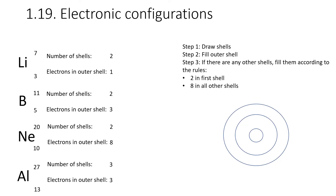Just a few more examples: lithium is 2,1 — two electrons in the first shell, one in the outer shell. Boron has two shells and three in the outer shell, so two in the first and three in the outer — giving 2,3. Neon has two shells and eight in the outer shell — giving 2,8. Aluminium has three shells: two in the first, eight in the second, and three in the third, since it's in group three — giving 2,8,3.